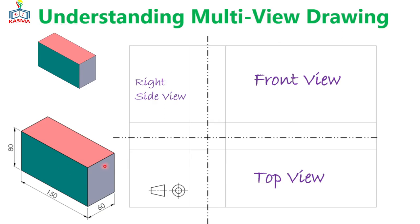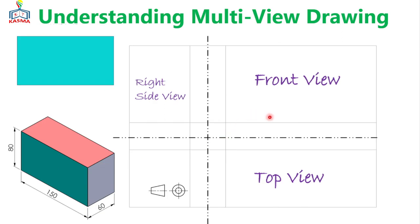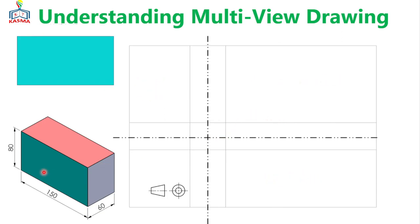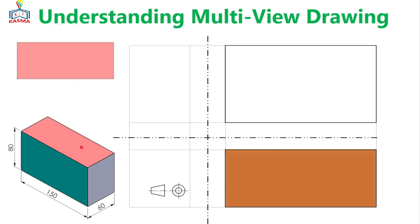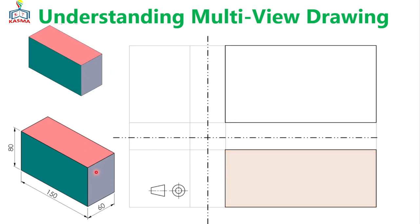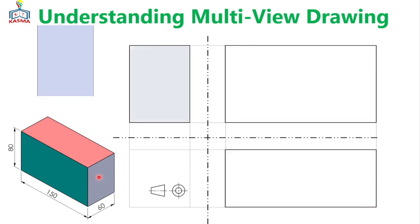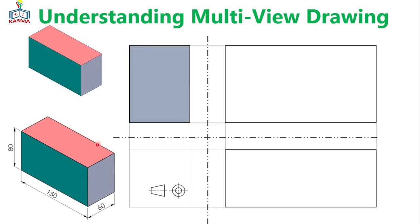The front view is constructed with the sky blue color. The top view is shown with just a red color. And for the right side view we can use just a gray color. So these are the right side views of the given objects — a simple rectangular prism represented in three views.